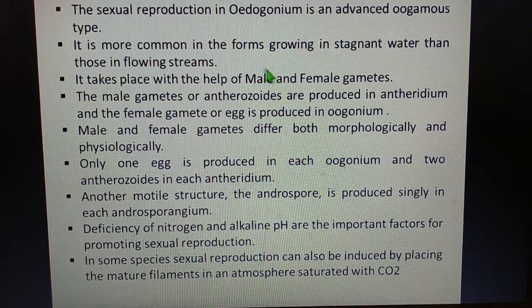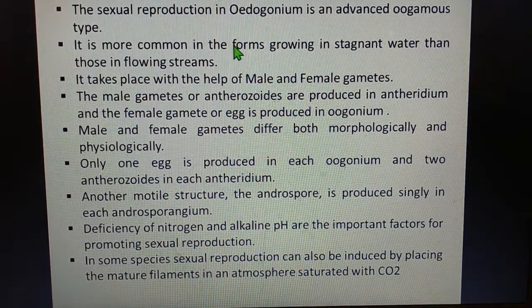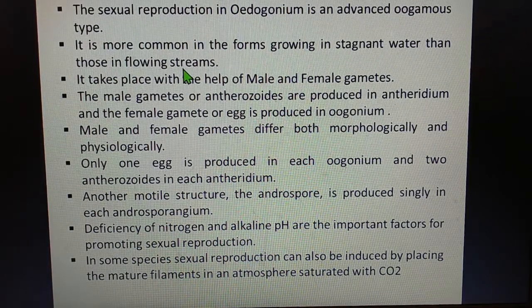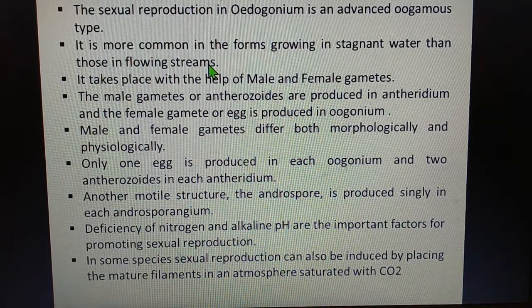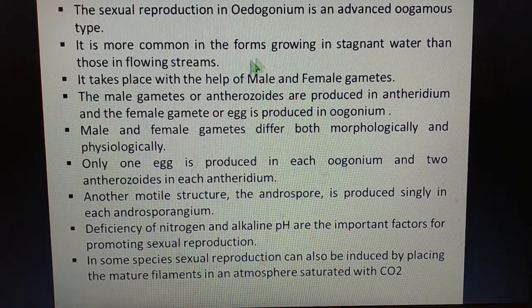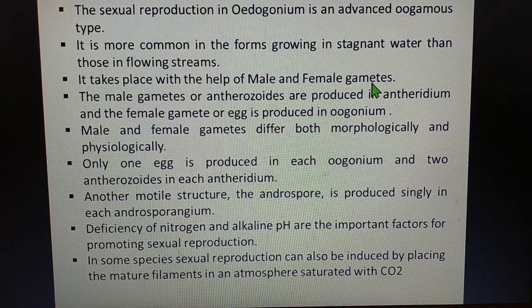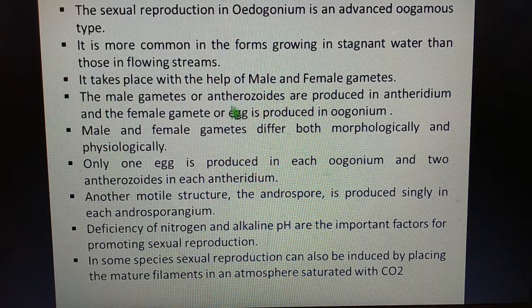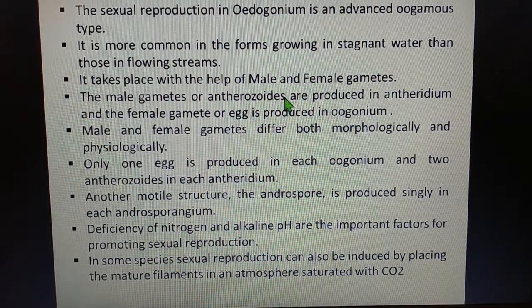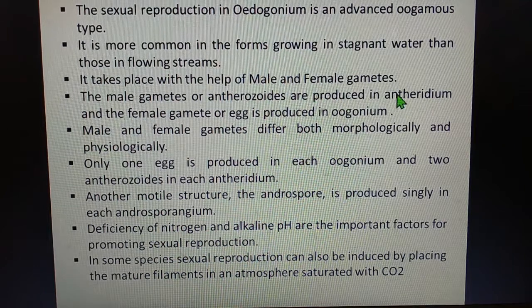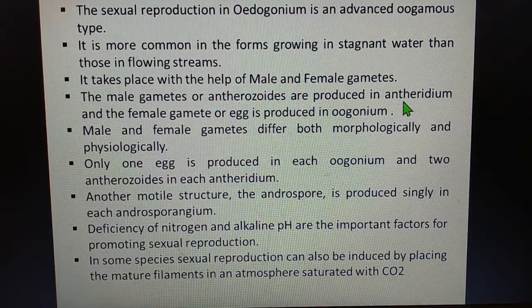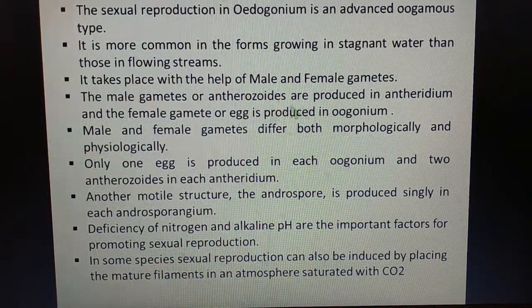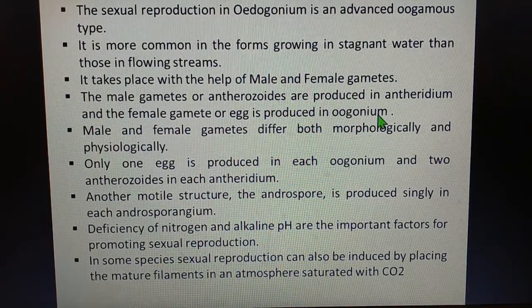Sexual reproduction in Oedogonium is more common in those forms which grow in stagnant water rather than those which occur in flowing streams. It takes place with the help of male and female gametes. The male gametes are referred to as the antherozoids, and they are produced in the antheridium, which is the male sexual structure.